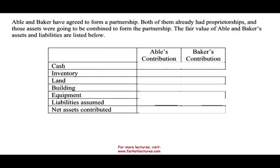So what's the prerequisite? We have four prior sessions about partnership — the link is in the description if you're interested. In this session, we will work a partnership example. A and B have agreed to form a partnership. Both of them already had a proprietorship and those assets are going to be combined to form a partnership. The fair value of Abel and Baker are shown below.